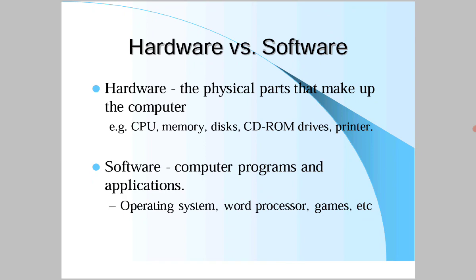Today we continue from the last class. Hardware means the physical parts or physical components that make up the computer - that is CPU, memory, disk, CD-ROM drives, printers, monitor, keyboard, mouse, DVD drives, power supply units, motherboard, RAM, and disk drives. All these are hardware components - physical components of a computer.